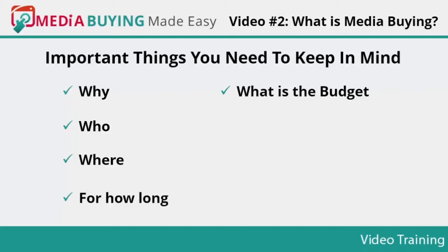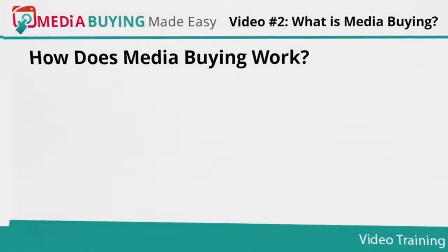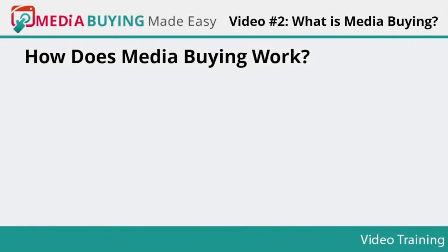Number six — type of media buying: which type of media buying method are you going to use in your marketing strategy? Number seven — use tracking: what are your tangible goals such as ROI, how many sales and clicks have you received, how many new followers you get? You need to analyze your media buying campaign to know about your ROI, sales, and followers.